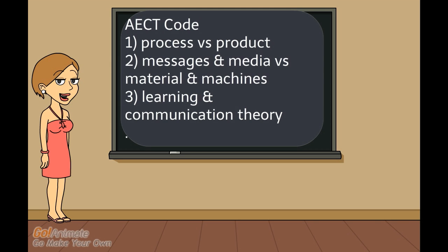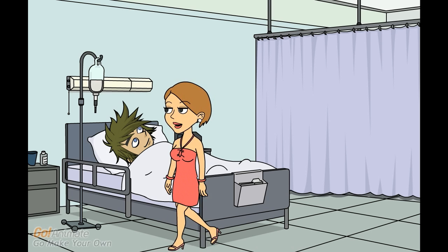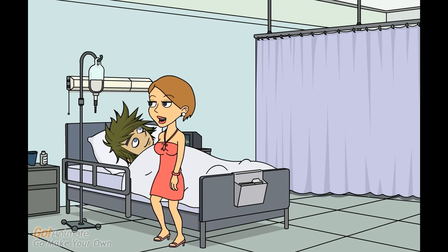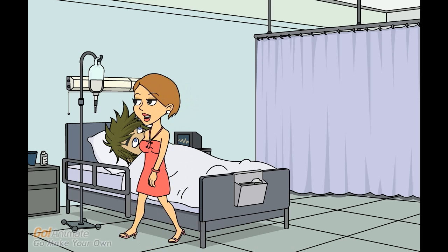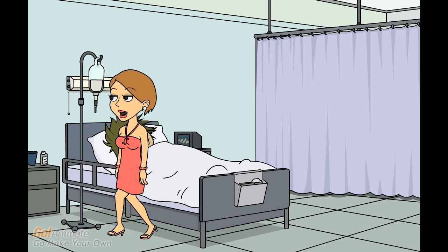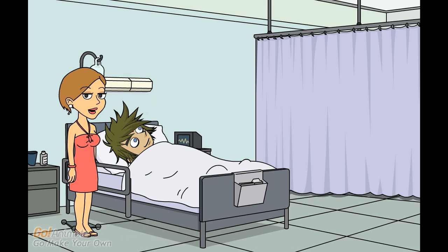The introduction of certain elements of learning and communication theories — such as source, message, channel, receiver, effects, stimulus, organism, and response — all added to the educational technology field. The 1963 definition was heavily influenced by James Finn's six characteristics of a profession: an intellectual technique, an application of that technique, a period of long training, an association, a series of standards and ethics, and intellectual theory that is constantly expanded.